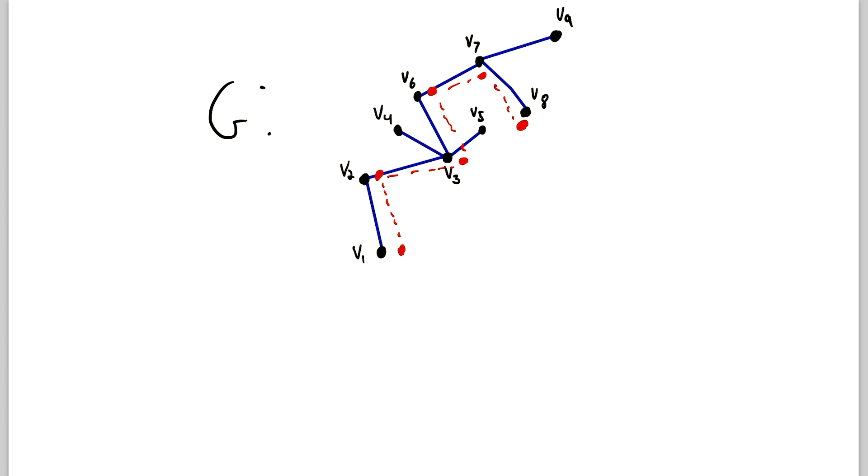And how can we represent that path? Well, we'll call it P and just like with trails and walks, we can write this as a sequence of vertices. Beginning, of course, with the vertex we started at, then the next vertex we went to and so on.